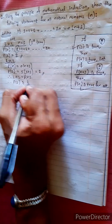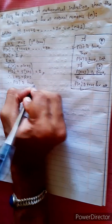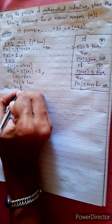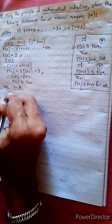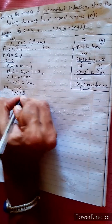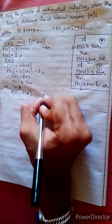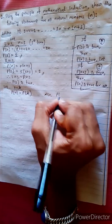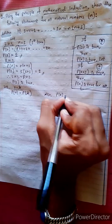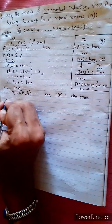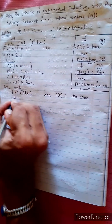P1 is true. Now let n equals k — Pn equals Pk. We assume Pk is also true.